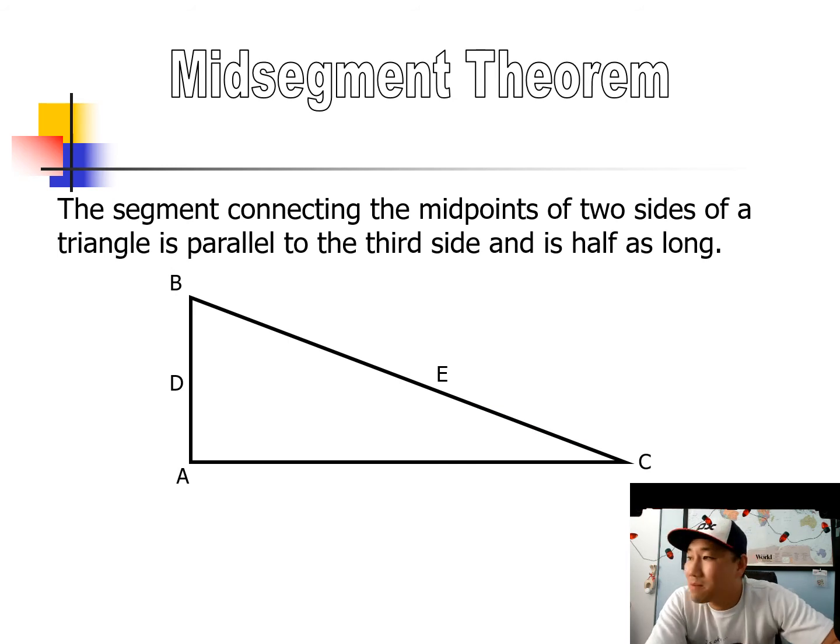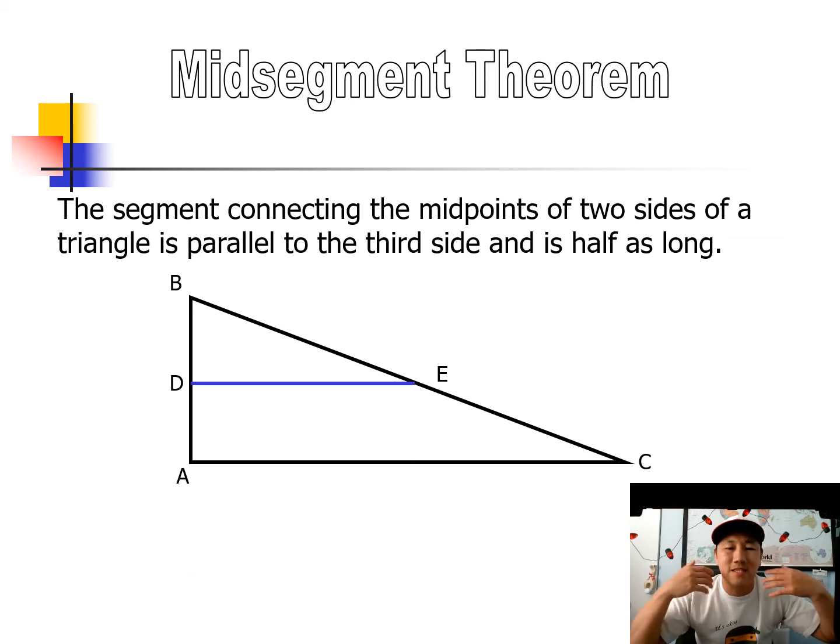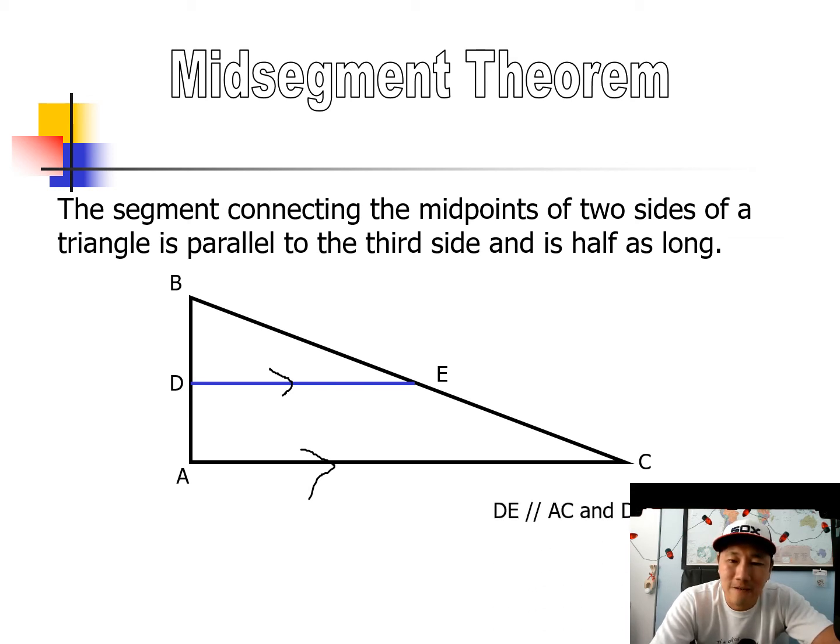Let's do the mid-segment theorem. The segment connecting the midpoints of two of the sides of the triangle is parallel to the third side and is half as long. So, let's take this mid-segment, DE. It turns out that DE is parallel to AC. Not only that, DE is half as long as AC. DE is parallel to AC, and then DE is equal to one-half the length of AC. That's the mid-segment theorem. So, let's use some of that in an example.